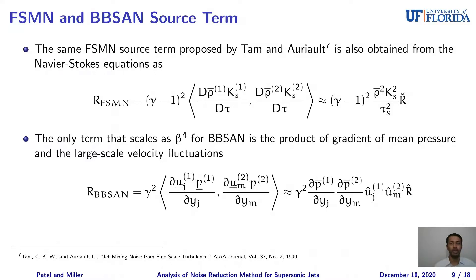We identified two different source terms for fine-scale mixing noise and shock-associated noise from the Navier-Stokes equations. For fine-scale mixing noise, we identified the same source term proposed by Tam and Auriault using the gas-kinetic theory similarity argument, but obtained it independently from the Navier-Stokes equations. The source term is the total or material derivative of the turbulent kinetic energy from fine-scale structures, representing the pressure exerted by the fine-scale turbulent structures. For shock-associated noise, we identified a source term that scales as beta to the power of 4, where beta is the off-design parameter. This source term is the multiplication of the gradient of mean pressure with the large-scale anisotropic fluctuations — the gradient of mean pressure represents the strength of the shock cell structure, while the large-scale fluctuating velocity represents convection due to the large-scale structures.